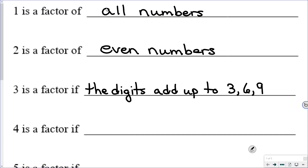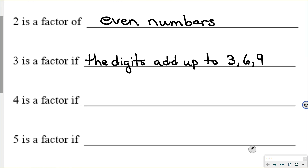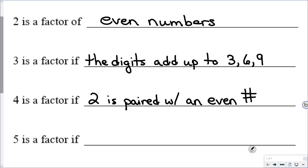4 is a factor when you can divide a number by 4 by looking at your factor list. If 2 is a factor, it is possible for 4 to be a factor. And 4 is a factor based on what 2 is paired with, because you put your factors down in pairs. So 4 is a factor if 2 is paired with an even number. For example, 36: 2 times 18 is 36, and 2 is paired with 18, which is even, which tells you that 4 is a factor.